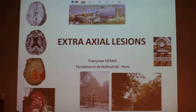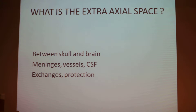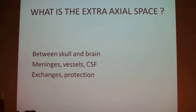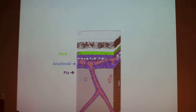These lesions are very interesting and perhaps a little less well-known than the parenchymal lesions. The extra-axial space where these lesions develop is in between the skull and brain. It contains meninges, vessels and CSF, and the aim of this extra-axial space is exchanges and protection of the brain. Just a little anatomical reminder: the meninges are composed of two layers.